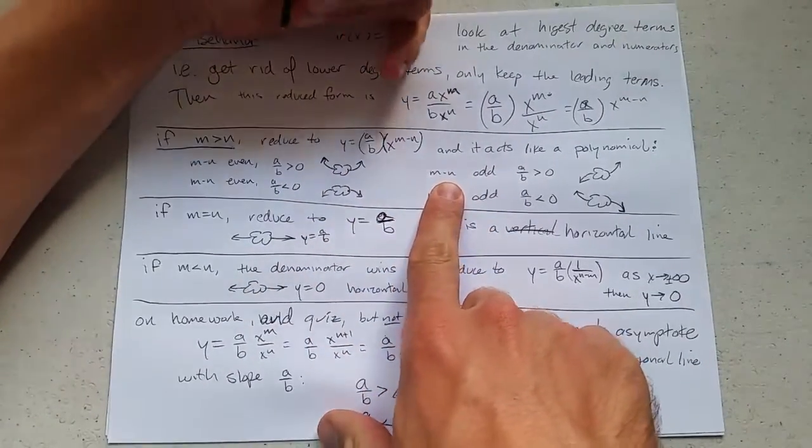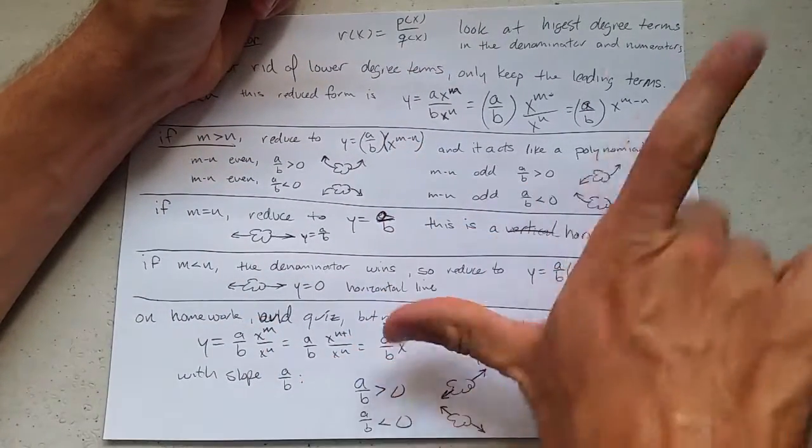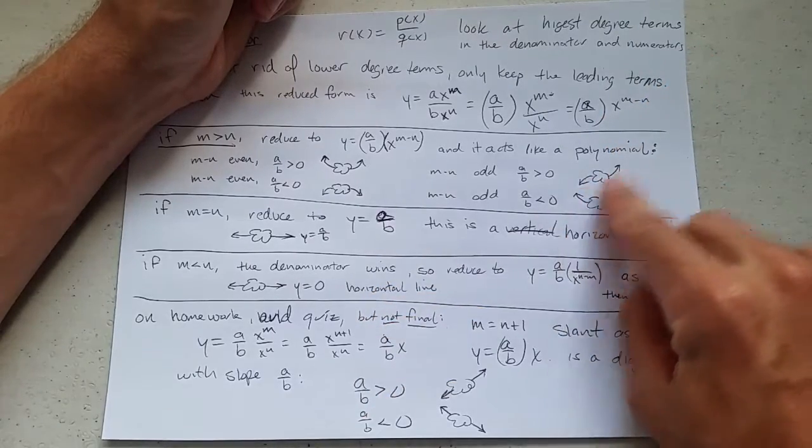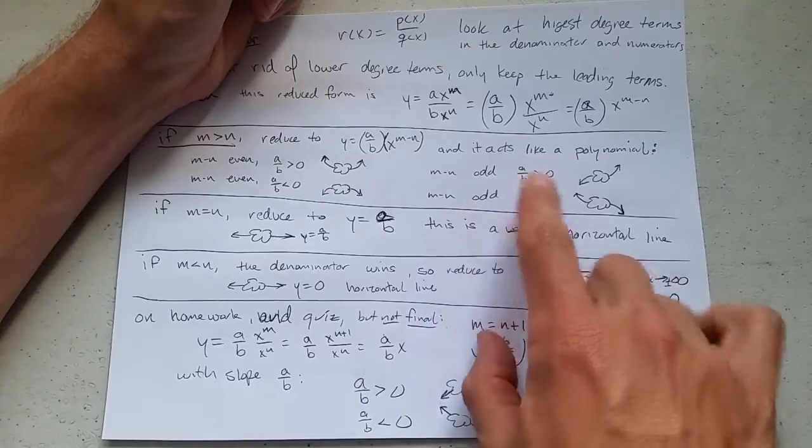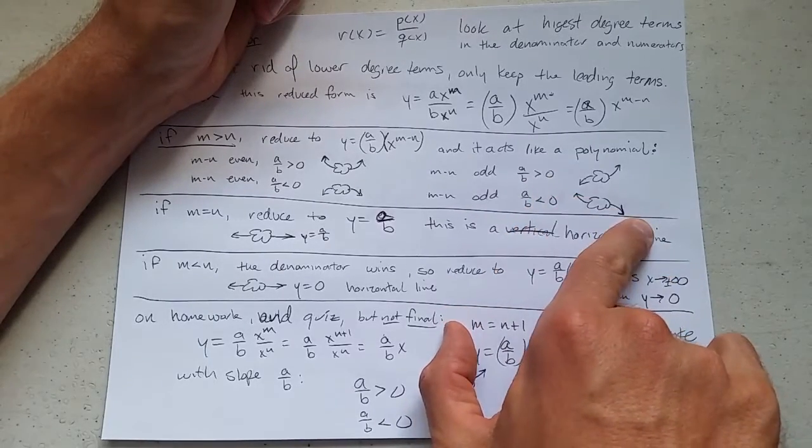You have odd. m minus n is odd, so this power reduces to odd. If you're positive, you have up on the right, down on the left. I like to think of this as sort of increasing end behavior. If you're odd and you're negative, you get this end behavior. This is basically decreasing end behavior.